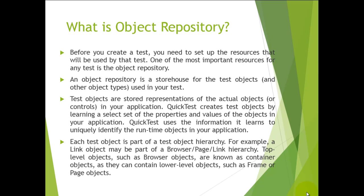While replay, QTP will match the properties and methods and then perform the action on the screen. If there is any conflict between the recorded properties and the replay properties, QTP will fail. For example, if instead of OK there is a button called Submit, QTP will not identify it as OK — it will identify it as Submit and will not perform any action on that button.